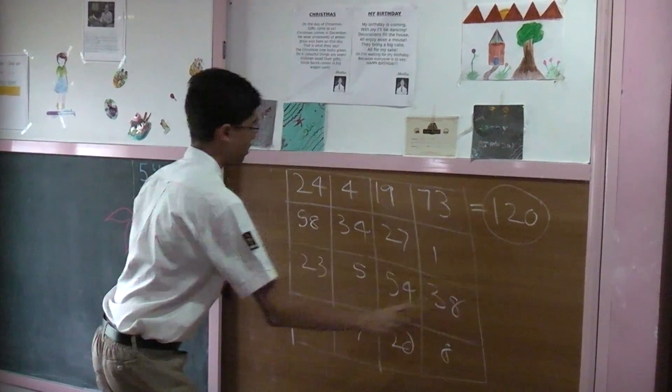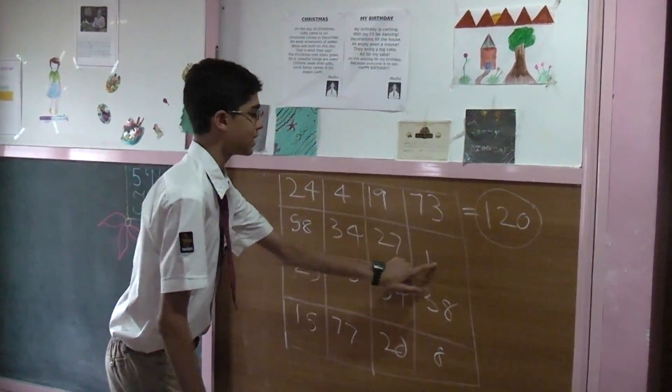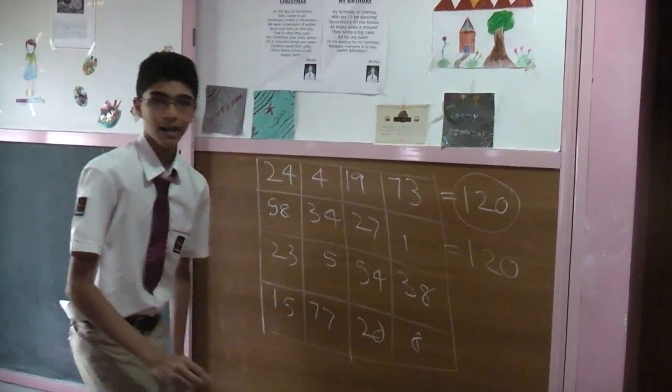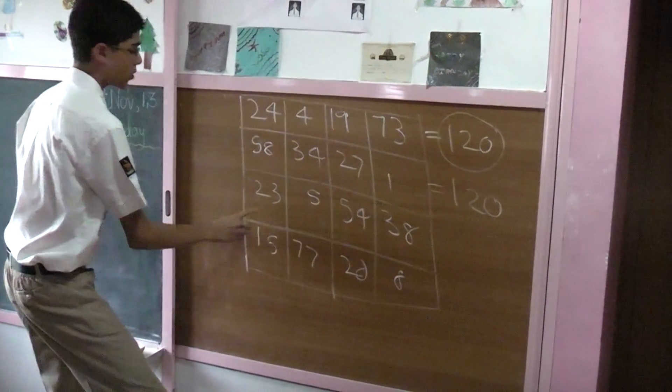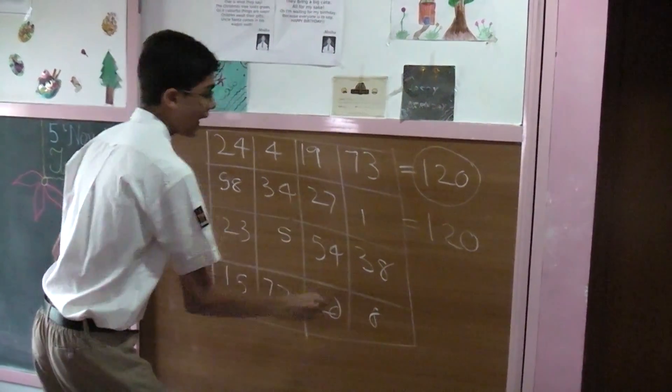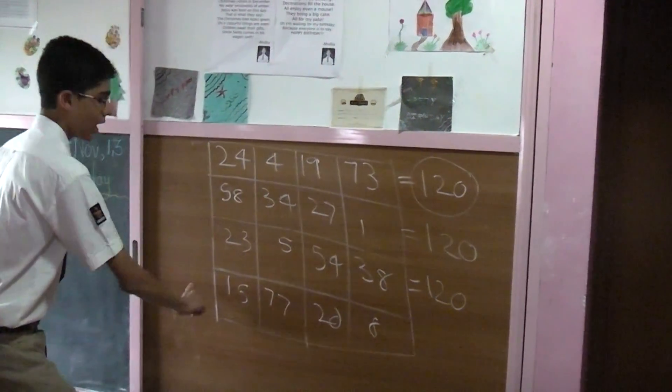We can add these numbers to get 58 plus 34 which is 92, 92 plus 1 is 93 plus 27 is also 120. We can add this row to get 23 plus 5 is 28, 28 plus 54 is 82, 82 plus 38 also is 120. You add this last row,